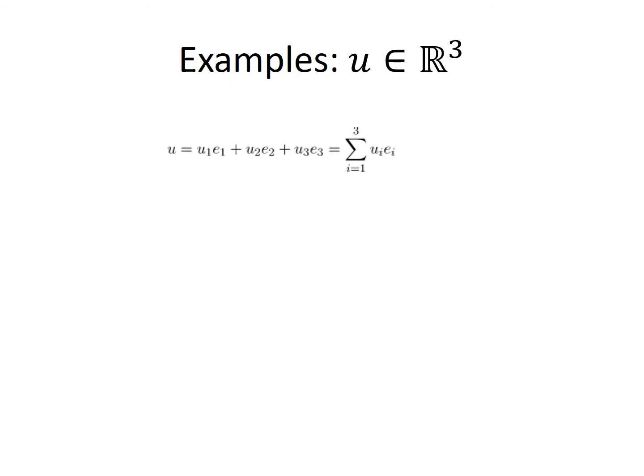Let's examine how this convention works with a few examples. First, let's consider the simplest element of our three-dimensional vector space, a vector u. This vector has three components, u₁, u₂, and u₃, along the three directions e₁, e₂, and e₃. It can be written as the sum of u₁e₁ plus u₂e₂ plus u₃e₃.